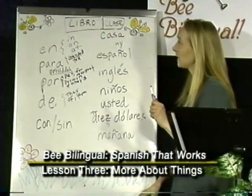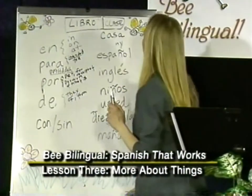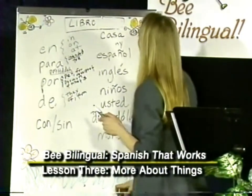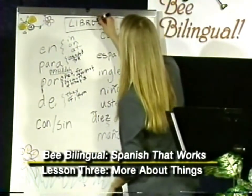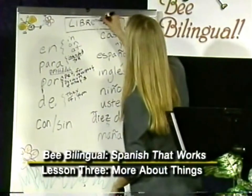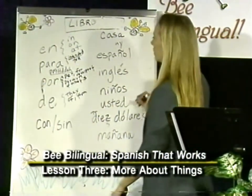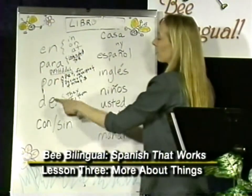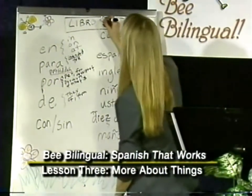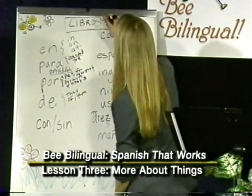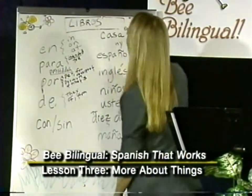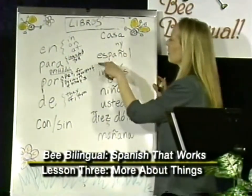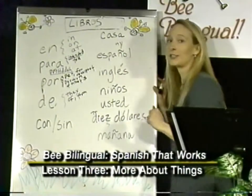Remember that when you change a noun, you change its meaning. Libro is a noun, and so are the words here. So for example, when we said 'book of Spanish' — Spanish book — we said 'libro de español.' If I want to say 'Spanish books,' I'm talking about books of Spanish, so it's still 'libros de español.' This word doesn't change, because changing this word would change its meaning.